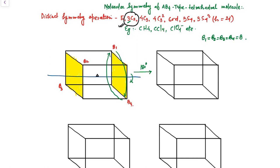In the same way, the position of B2 interchanges with B3, and B3 interchanges with B2. So after this, the new arrangement has B1 interchanged with B4, B4 interchanged with B1, B2 interchanged with B3, and B3 interchanged with B2. After this operation, we see that all the B atoms are equal, so structure number one and structure number two are equivalent to each other. That's why this molecule has one C2 axis passing through the central atom A and containing the two opposite faces.